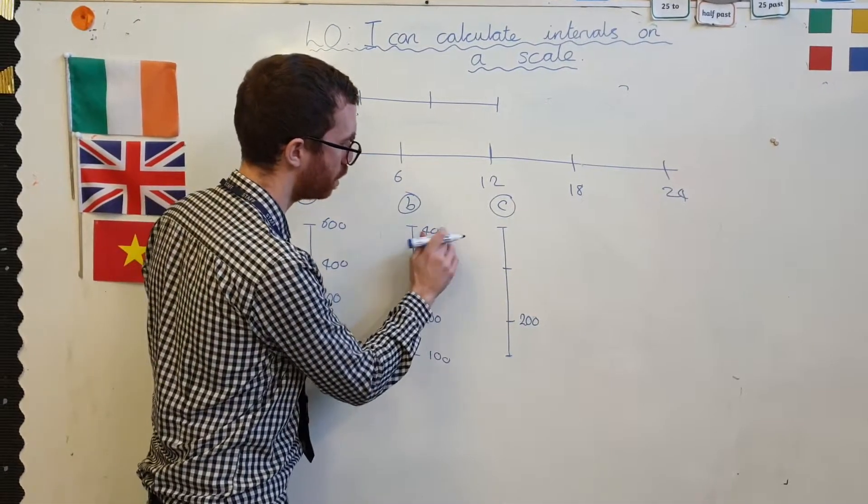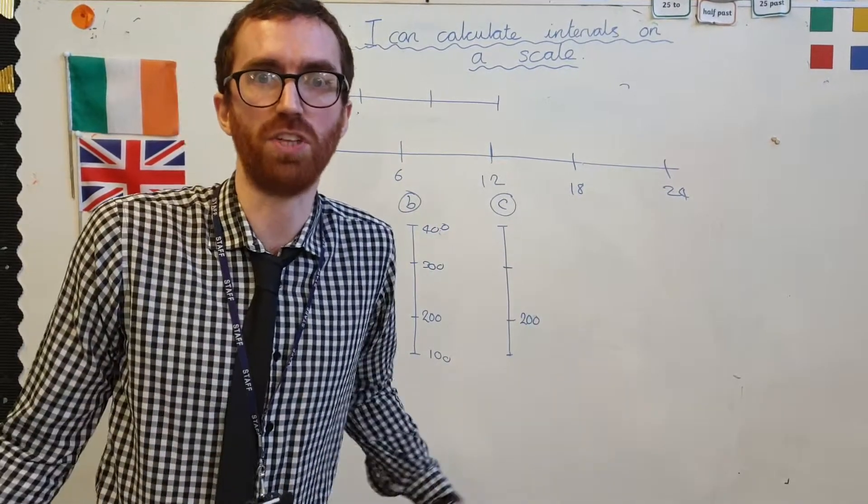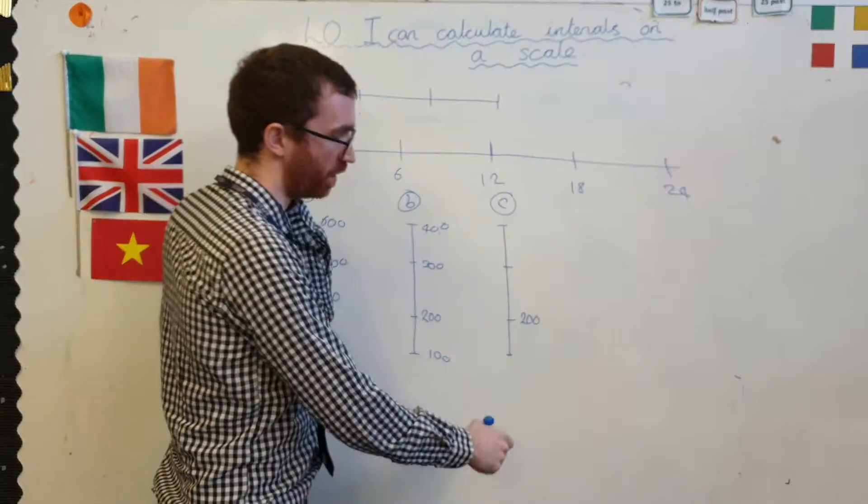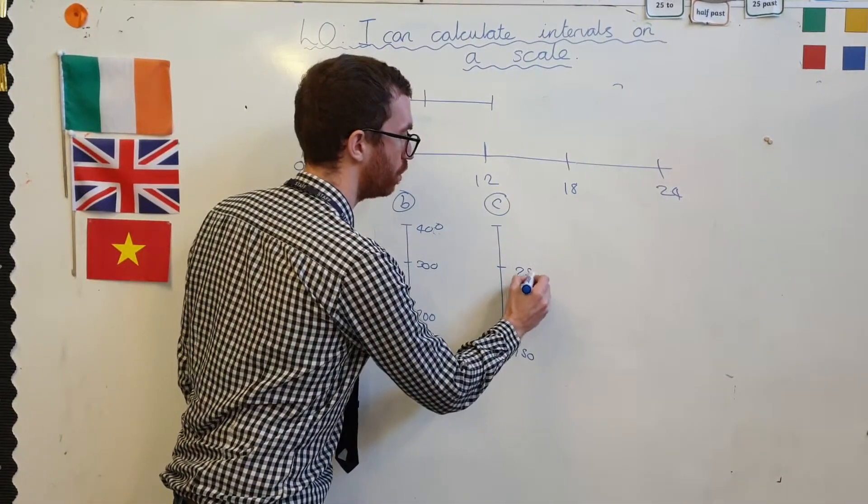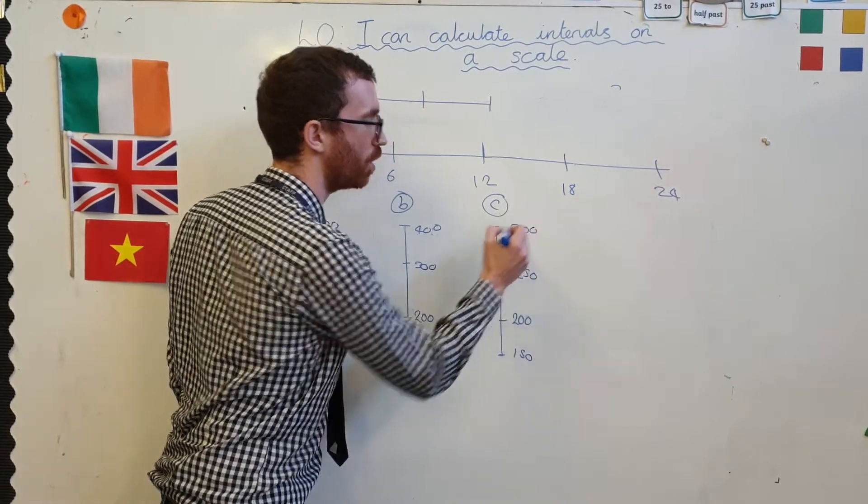What if I make the jumps, it could be anything really, it could be 50, couldn't it? So if I'm going down 50, that would be 150. If I'm going up 50, that would be 250, that would be 300.